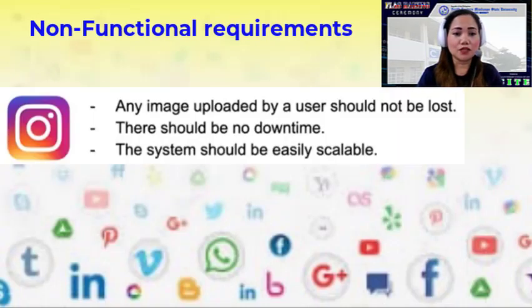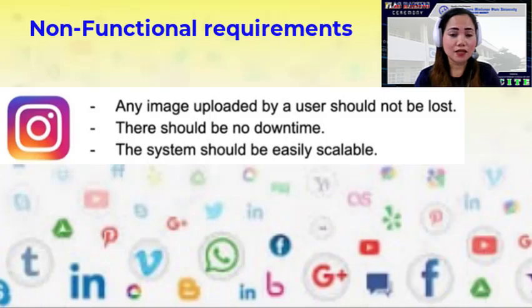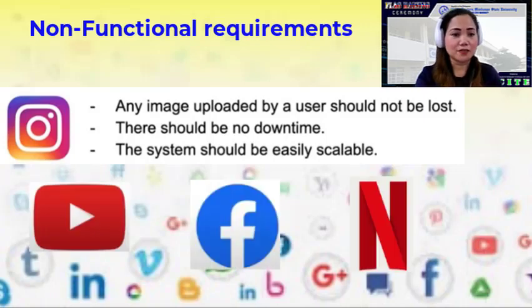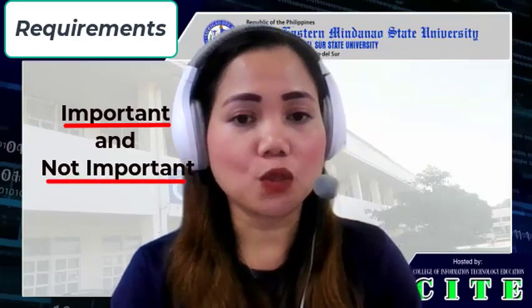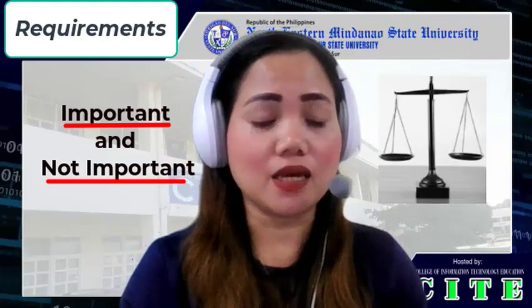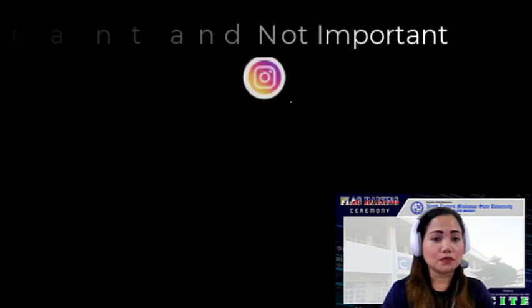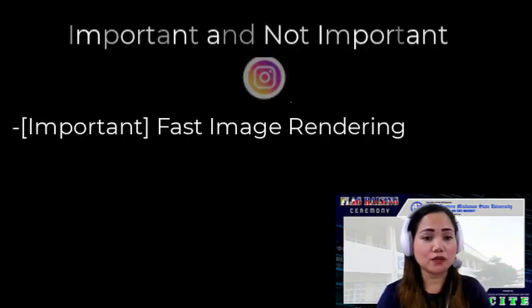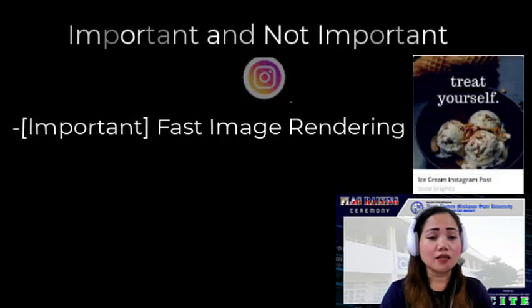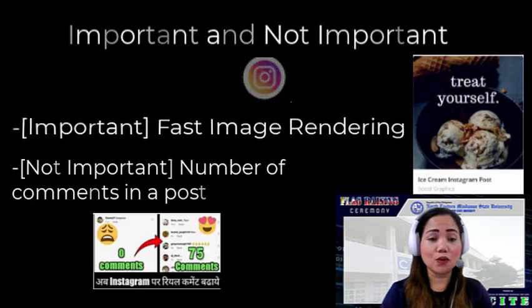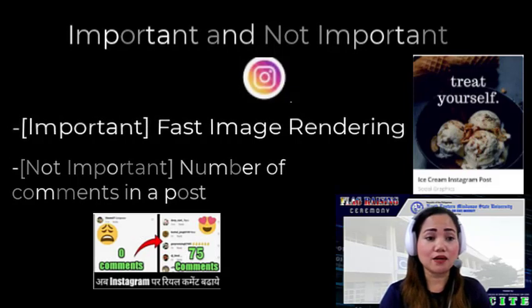For non-functional requirements, for Instagram: any image uploaded by a user should not be lost, there should be no downtime, and the system should be easily scalable. Similarly for other applications like YouTube, Facebook, and Netflix. We should also understand that based on requirements, we decide what is important and what is not, and where we can do trade-offs. For example, in Instagram, fast image rendering is important because Instagram is all about images. The exact number of comments on a post may not be as critical.